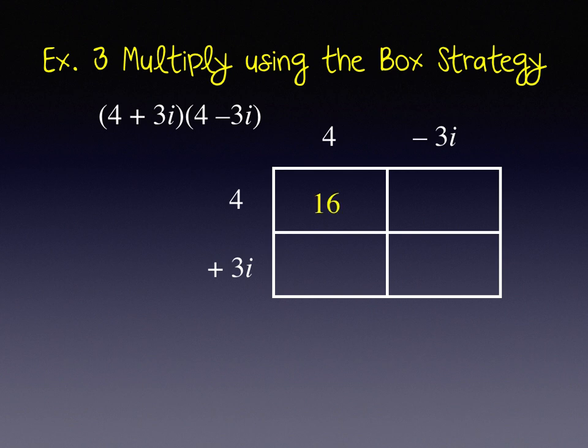4 times 4 is 16. 4 times negative 3i is negative 12i. In the lower left we get positive 12i. Now you will notice that these i terms will cancel out. The imaginary parts will cancel. And on the lower right we get negative 9i squared.